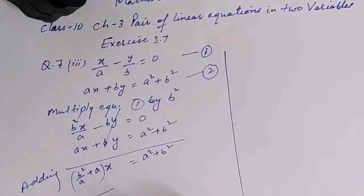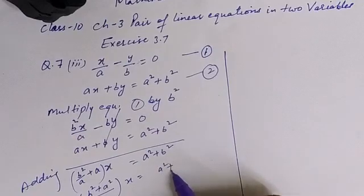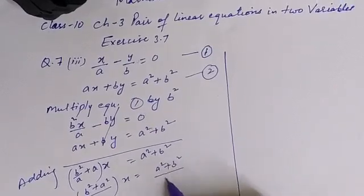Now here I'll take LCM as a, so it becomes here b square plus a into a, a square, into x is equal to a square plus b square. I can write as over 1 also.